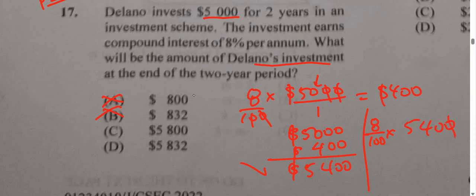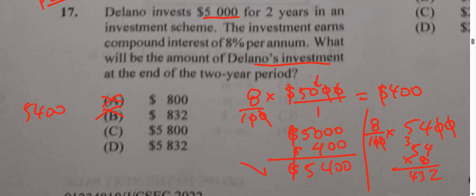We're going to divide by 100, and it's going to be 8 times 54. 8 times 4 is 32, carry the 3. 8 times 5 is 40, plus 3 is 43. So that's 432. We're going to add this 432 to the amount from the second year: 5,400 plus 432. We can see the answer is $5,832.